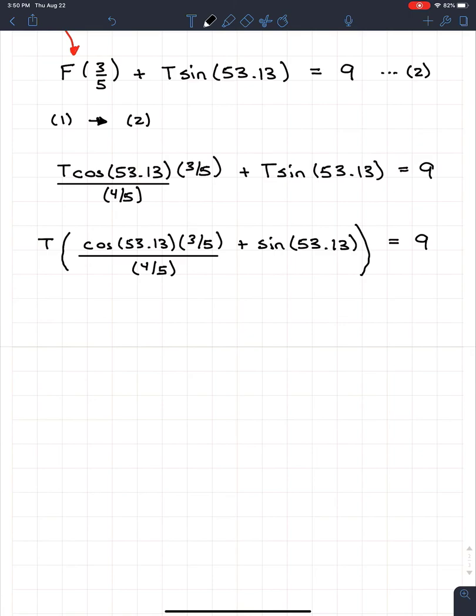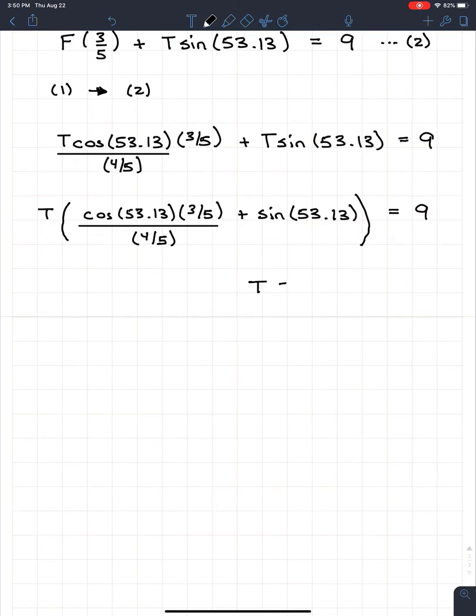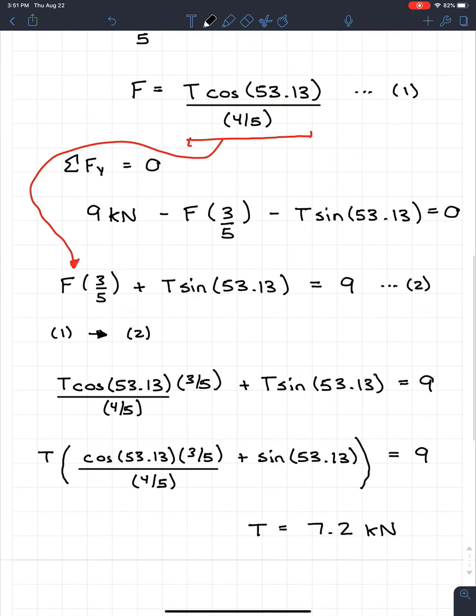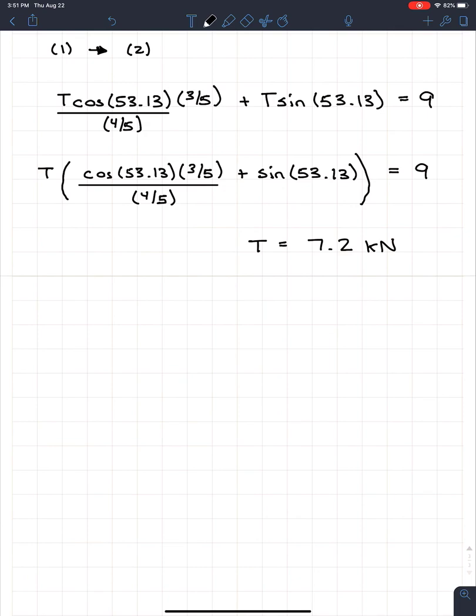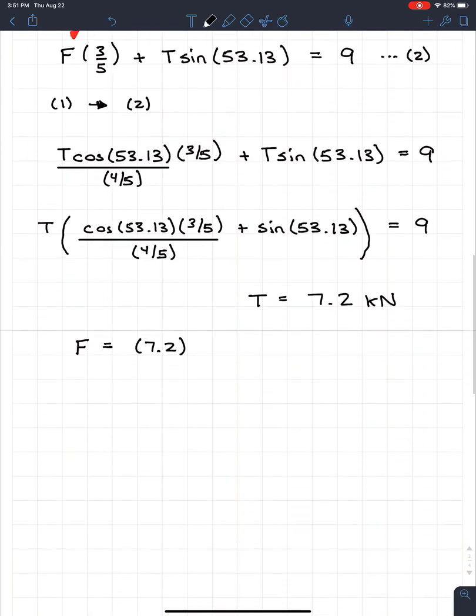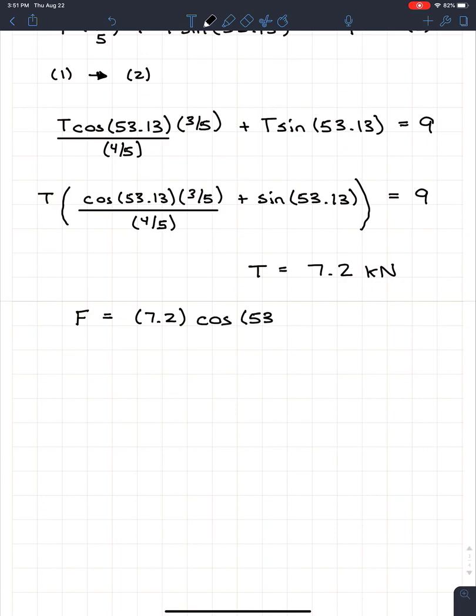We want to factor out the T, so T times the big bracket with cosine of 53.13 times 3/5 divided by 4/5 plus sine of 53.13, all equals 9. I have to take everything in that big bracket and move it to the other side. So it's going to be 9 divided by everything in that bracket, and we end up with T equals 7.2 kilonewtons. Now that we know T, we can go back to equation 1. We get F equals 7.2 times cosine 53.13 divided by 4/5. When we put this into our calculator, we get F equals 5.4 kilonewtons.